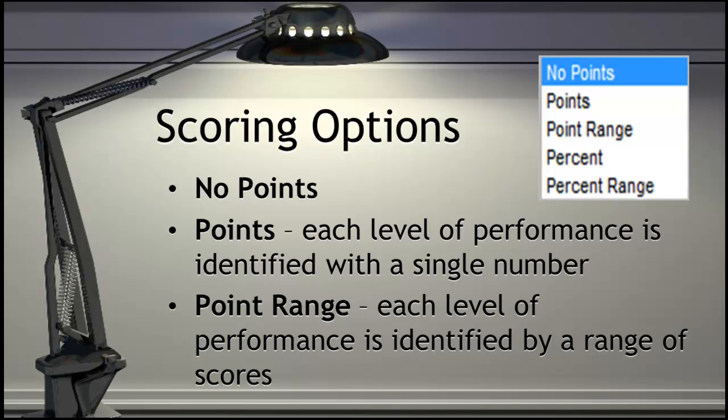The points option assigns a single score for each level. The point range option allows you to identify a high and low score for each level. If the range between the two is large enough, you will get additional scores in between the high and low options.